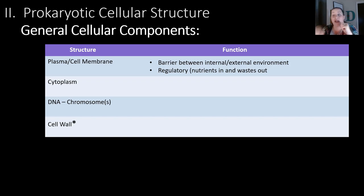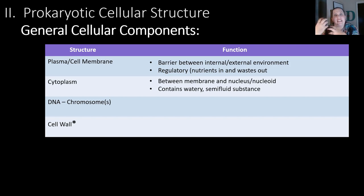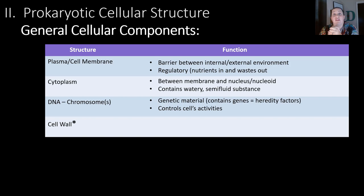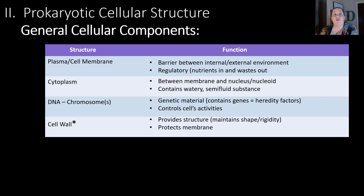Another thing that all cells have is cytoplasm. This is between the membrane and where the DNA is found, whether it's the nucleus or the nucleoid, and it contains a watery semi-solid type fluid. This substance allows for communication and movement within the cell. There's also going to be some DNA in the form of chromosomes — this is the genetic material containing our genes, the hereditary factors, and the DNA ultimately controls all of the cell's activities. The cell wall provides structure, helps maintain shape and rigidity, and protects the membrane.